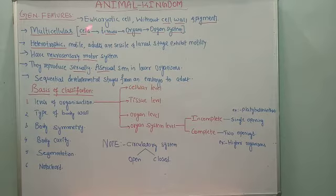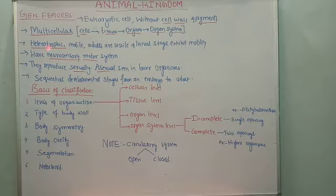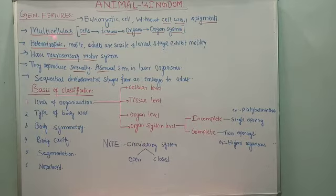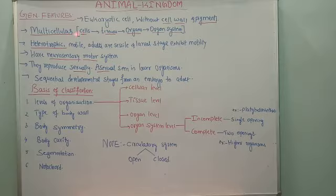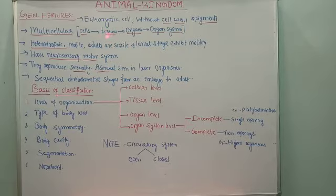Regarding organization — whether they are unicellular or multicellular — animals in the animal kingdom are highly advanced because their organization is highly advanced. They are multicellular, meaning the body is made up of many cells. Groups of cells aggregate together to form tissues, groups of tissues aggregate together to form organs, and groups of organs constitute an organ system.